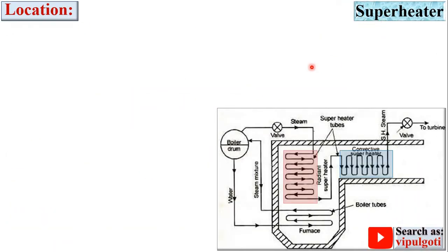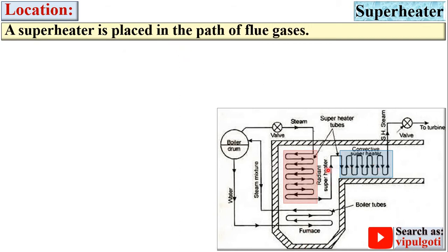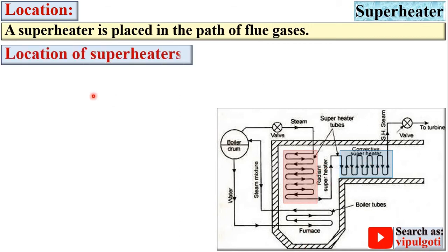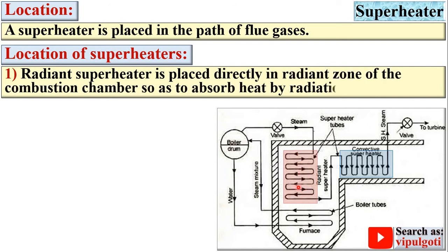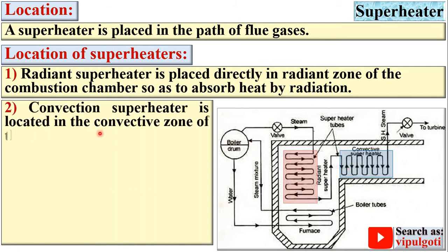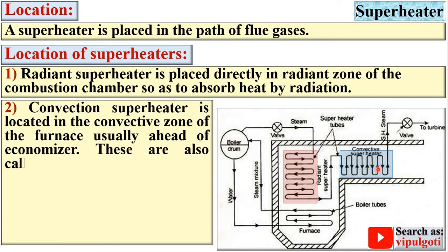Now, location of the superheater. Two types of superheaters are commonly used: radiant type and convective type. A superheater is placed in the path of the flue gases. The radiant superheater is placed directly in the radiant zone of the combustion chamber so as to absorb heat by radiation. The convective type superheater is located in the convective zone of the furnace, usually ahead of the economizer. These are also called primary superheaters.